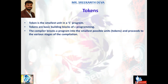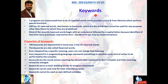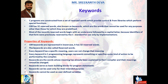One of the tokens is called keywords. C programs are constructed from a set of reserved words which provide control and from libraries which perform special functions. Keywords are reserved words. Every programming language consists of its own keywords. C89 has 32 reserved words, also known as keywords, which are words that cannot be used for any purpose other than those for which they are predefined. Every reserved word has a specific meaning and functionality.